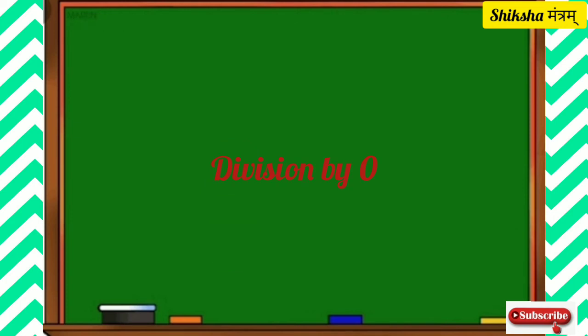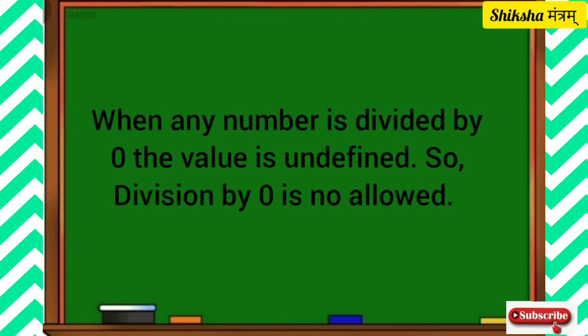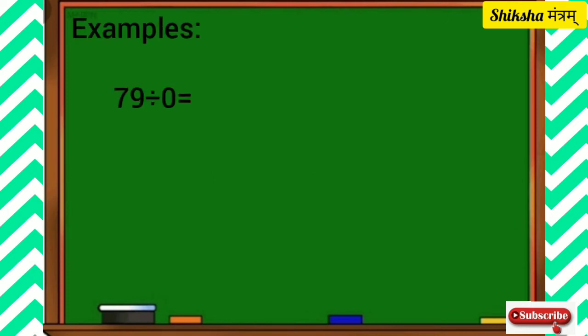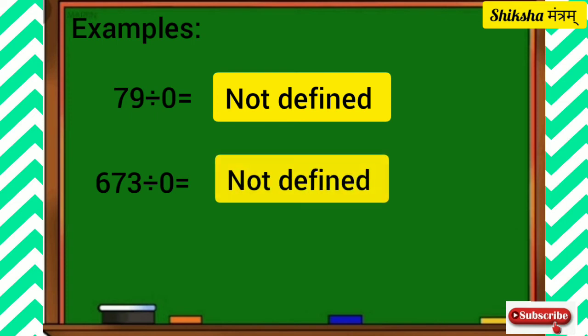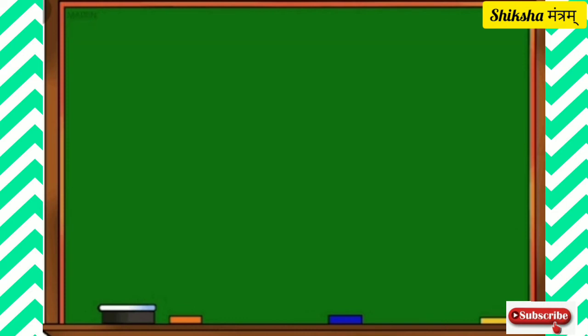Let's take one more property: division by 0. When any number is divided by 0, the value is undefined. So division by 0 is not allowed. For example, 79 divided by 0 is not defined, and 673 divided by 0 is also not defined. In maths, division by 0 is not allowed.